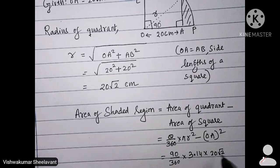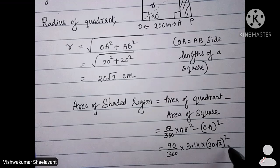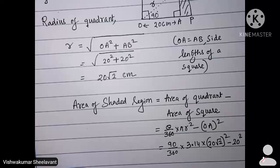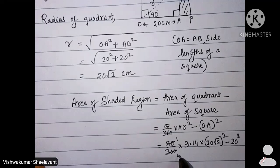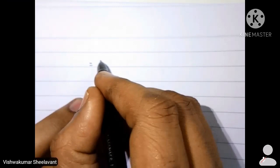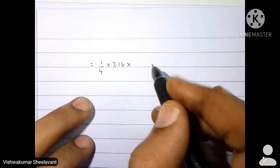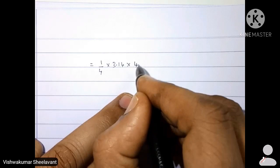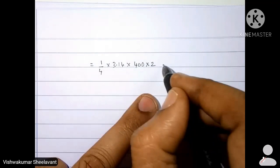r is 20 root 2 whole square minus 20 square. Cancel, 1 by 4 into 3.14 into 20 into root 2 whole square is 400 into 2 minus 20 square.